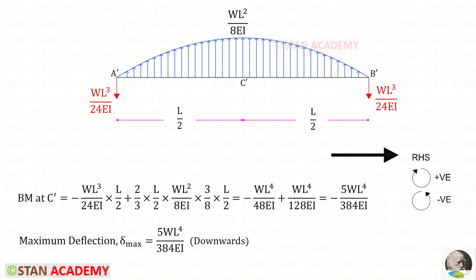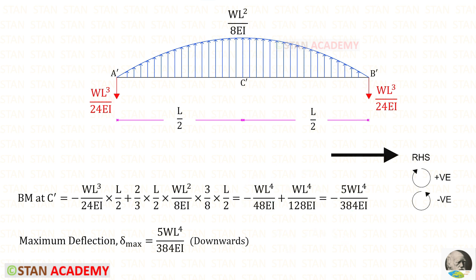Using a calculator: −1/48 + 1/128 gives −5/384. This is the maximum moment in the conjugate beam, so it will be the maximum deflection in the real beam. We have a negative expression, which means the deflection occurs downwards.